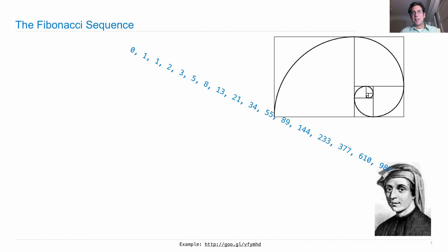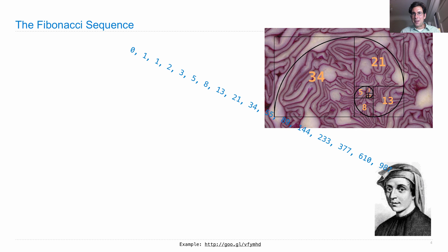For instance, you can use it to build the Fibonacci spiral, which is constructed by drawing a spiral through the corners of a bunch of squares, each of which has the side length of a Fibonacci number. The Fibonacci spiral is interesting mathematically, and people also like to look for that shape in nature, as in this cross-section of a red cabbage.